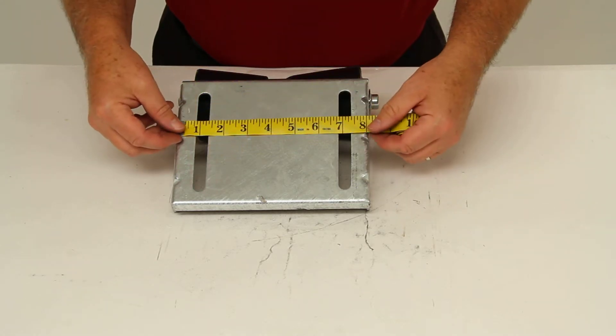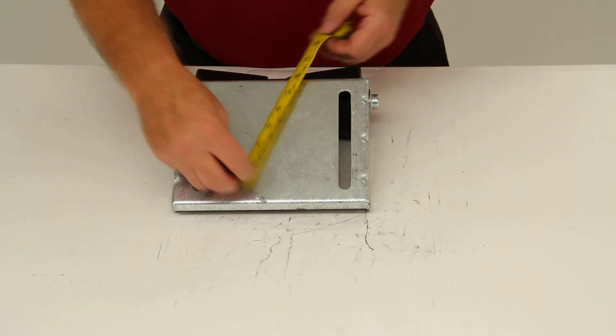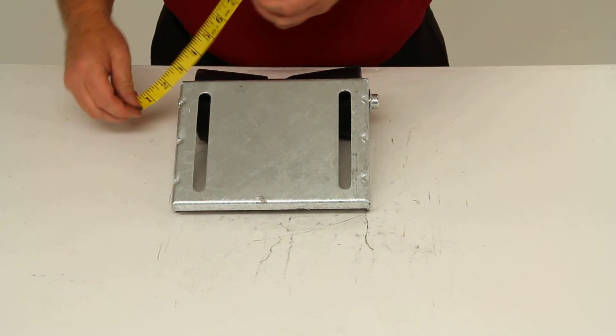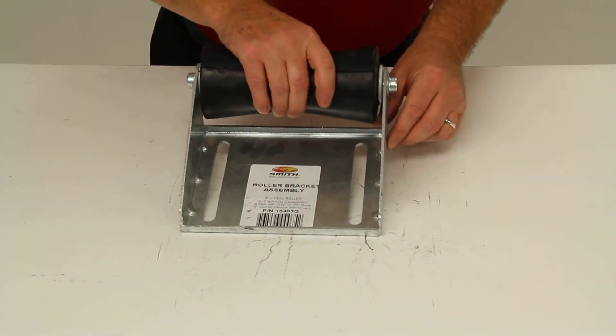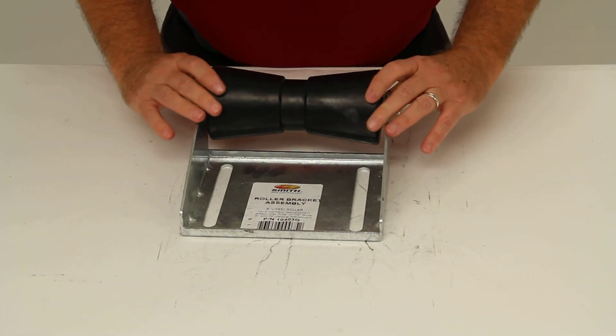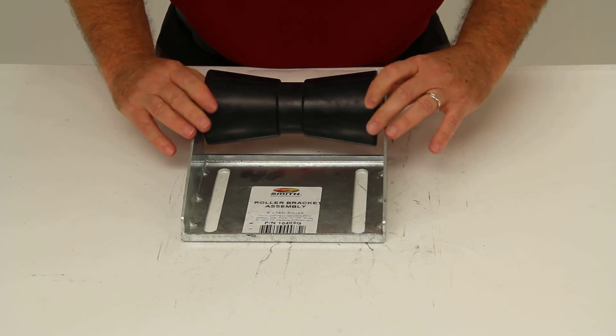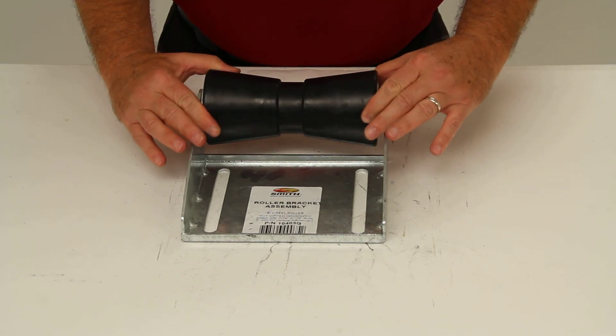I'll also give you the measurement on this mounting pad. It's 8 inches by 6 inches. This part is made in the USA. And that should do it for review of part number CE10403G. Thanks for listening.